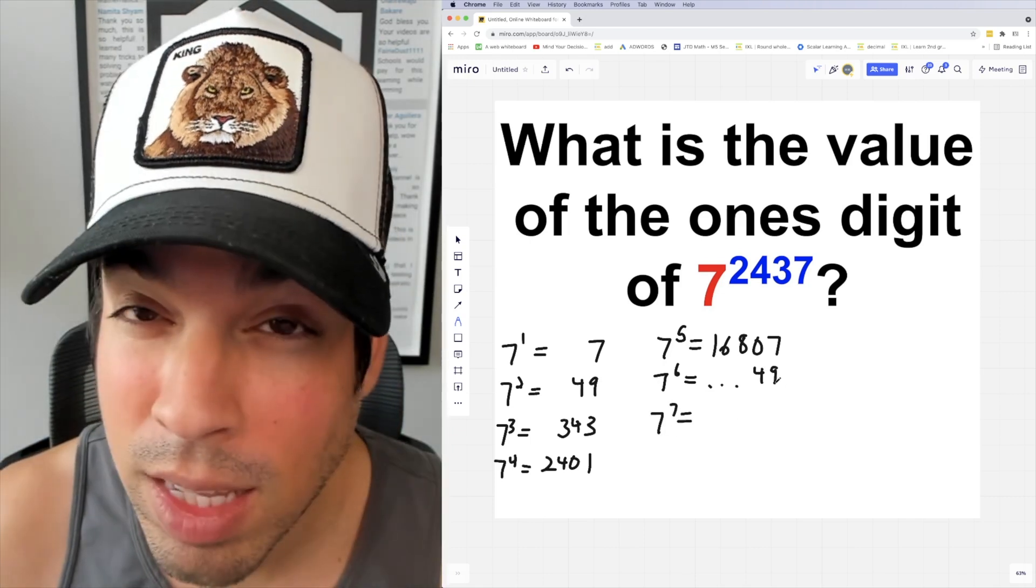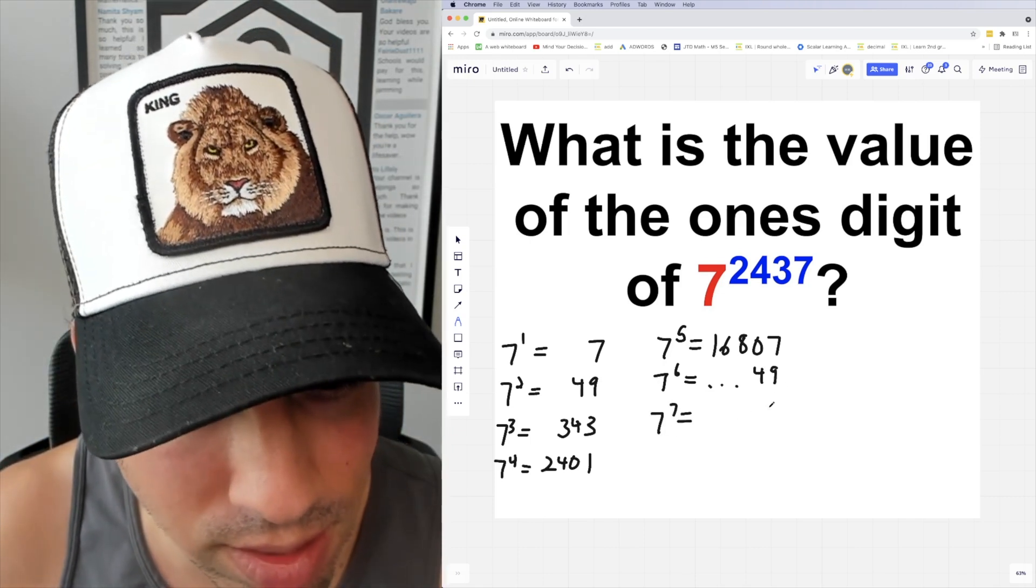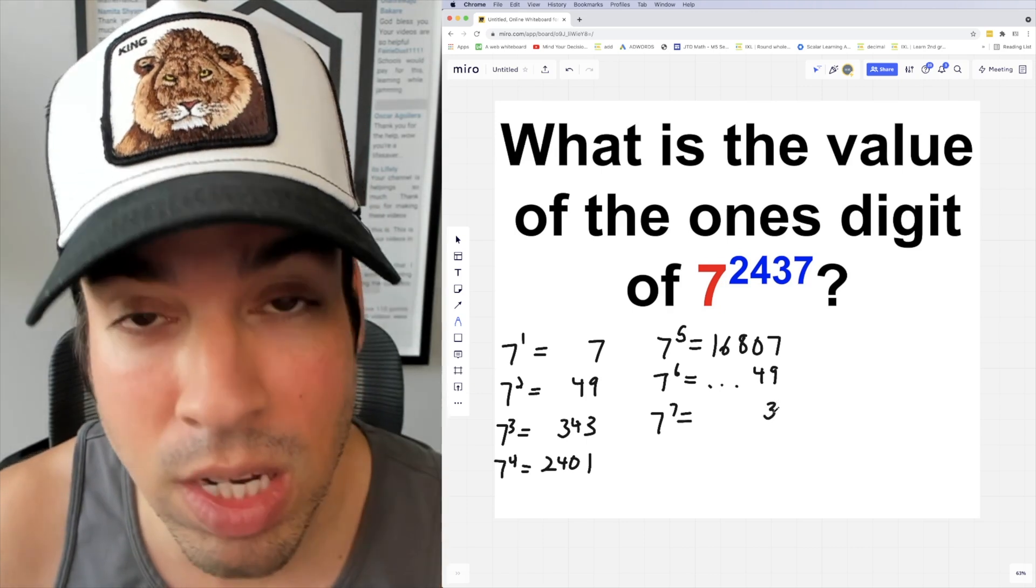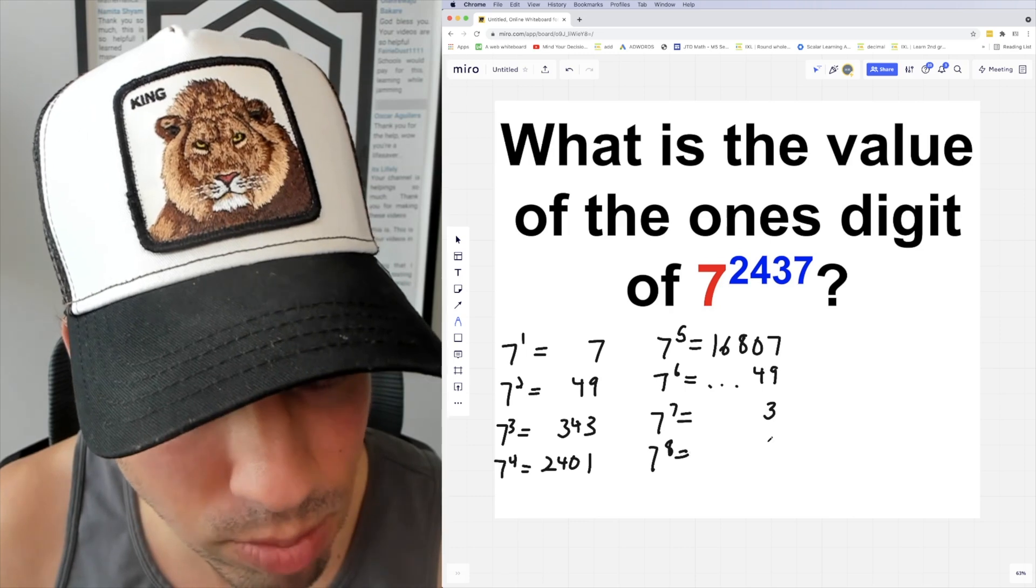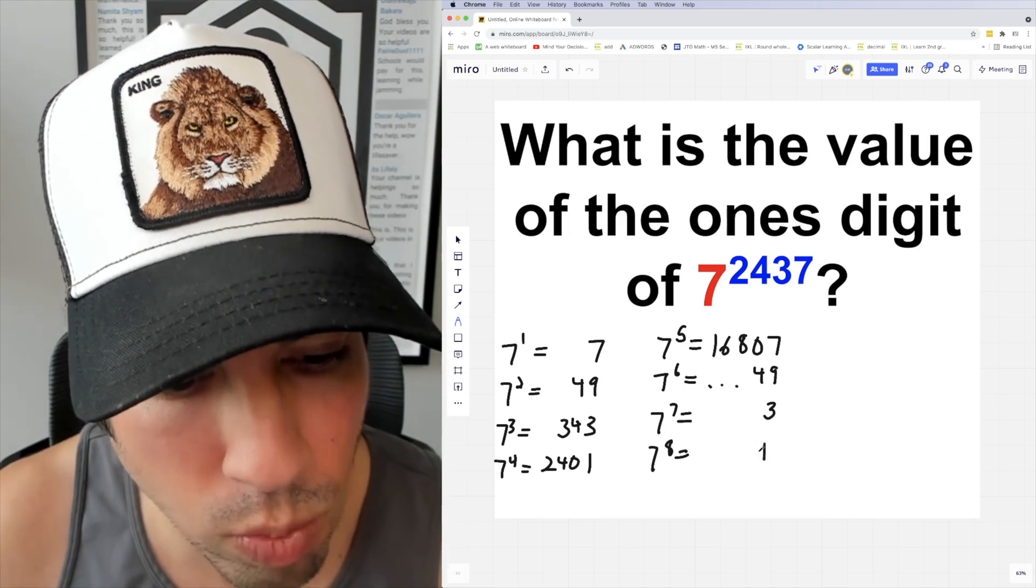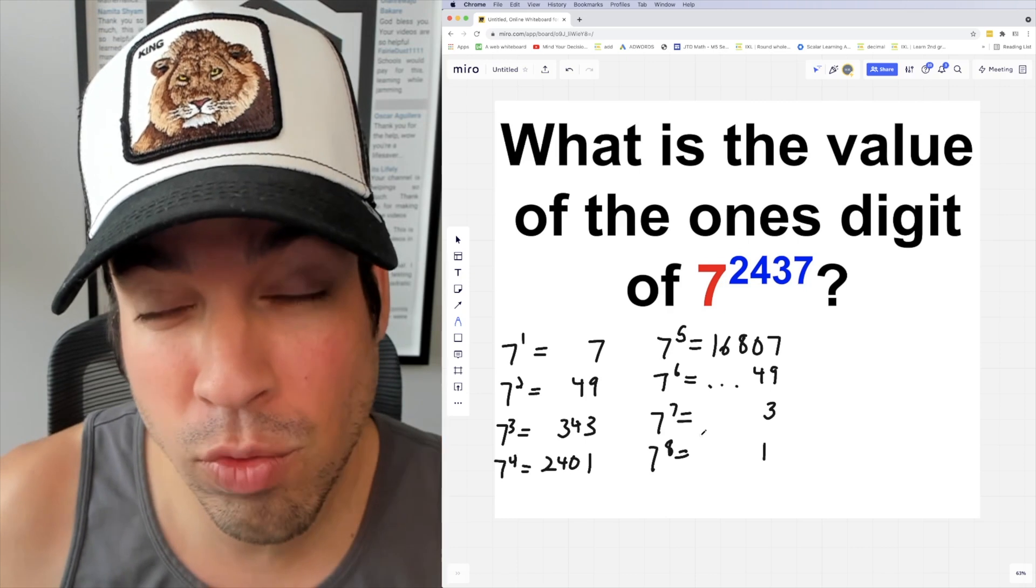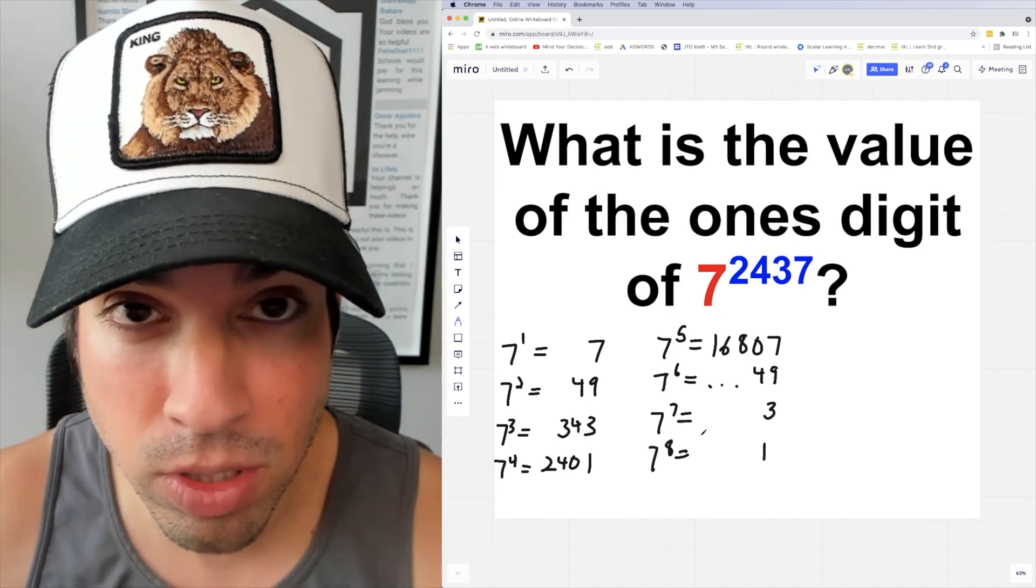7 to the seventh - we really care about that ones digit. 7 times 9 is 63, which means a 3 is going to appear in the ones digit once again. 7 to the eighth will be 7 times 1, which means a 1 will exist. What this tells us is that the ones digit is repeating every four numbers.